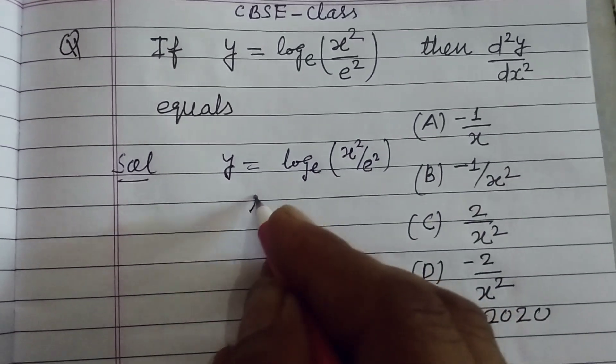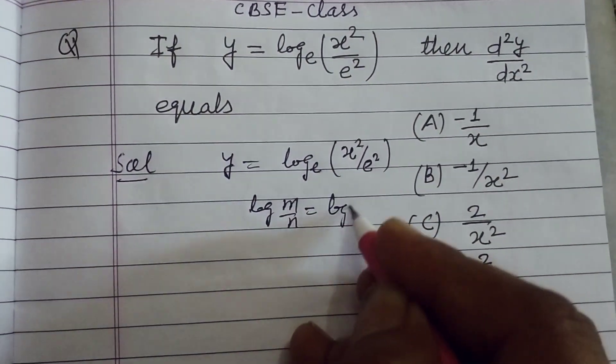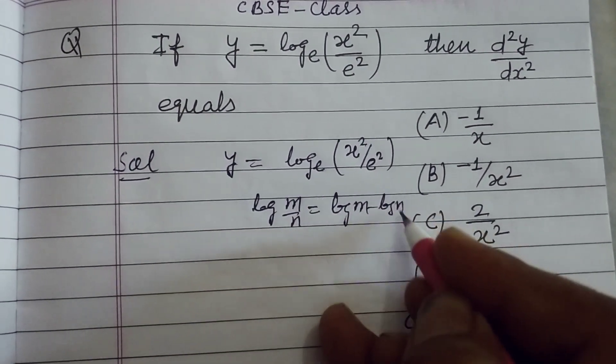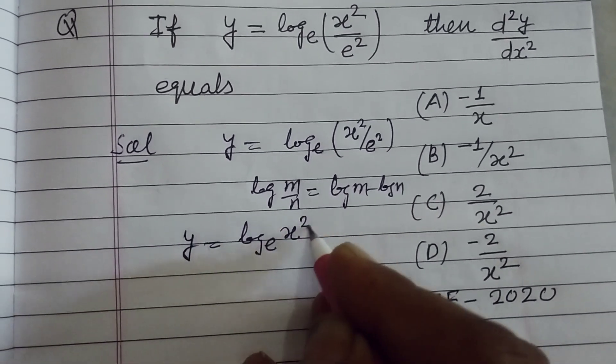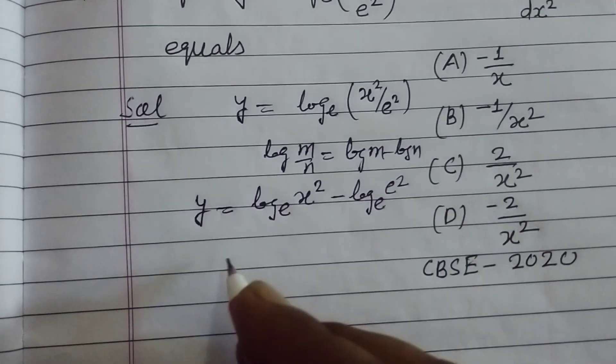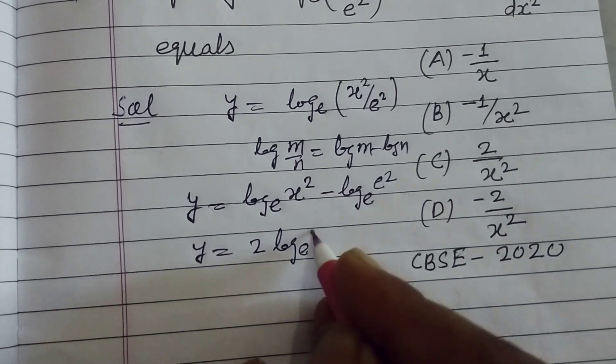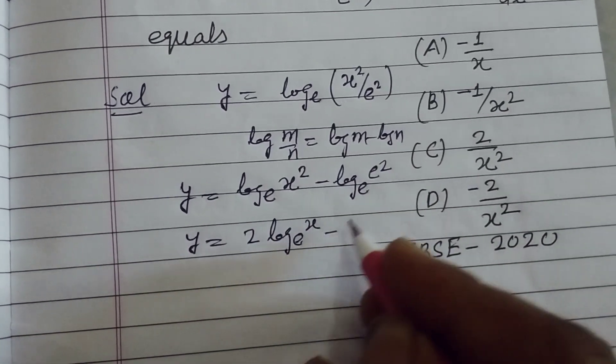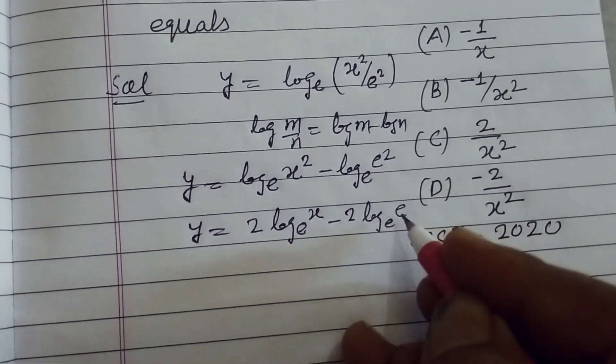Now using log m over n, this is log m minus log n. So y equals log base e of x squared minus log base e of e squared. So y equals 2 log base e of x minus 2 log base e of e.